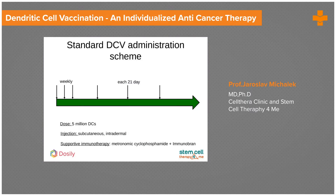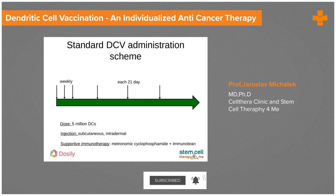The standard dendritic cell vaccination scheme consists of at least six doses. The first three are given on a weekly basis subcutaneously, and then we continue typically every three weeks. We can also consider supportive immunotherapy with low-dose cyclophosphamide on daily doses, and immunobrine, which is a stimulator of the immune system.